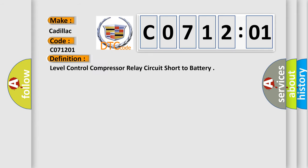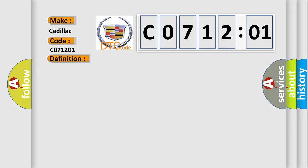The basic definition is Level control compressor relay circuit short to battery. And now this is a short description of this DTC code. The ESCM is powered up.